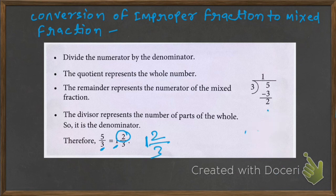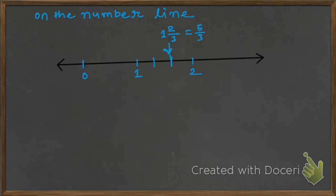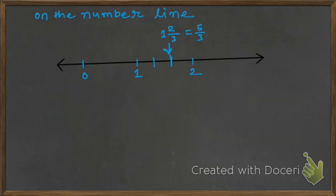It is very easy. I hope you have understood that 1 is the whole number. 2 is the numerator and 3 is the denominator. So that's all.